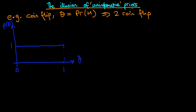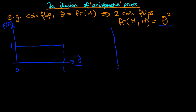But what about instead if we consider the example of two coin flips with the same coin? We could work out the probability of obtaining heads on the first throw and then heads on the second throw, which would be equal to theta squared, assuming independence between throws. Do we think that having a uniform prior for theta will translate into a uniform prior for theta squared — the probability of obtaining two heads?